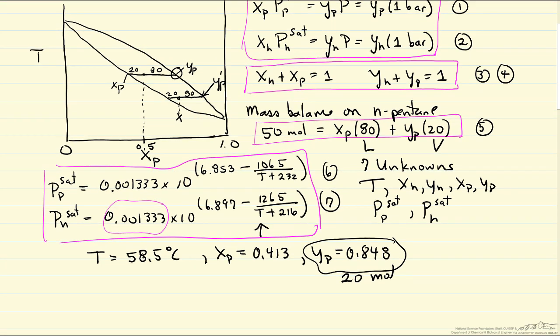And so we're going to end up solving the same equations. Antoine's equations don't change, the equations for Raoult's law for the two components don't change. The only thing that changes is the mass balance. And so the mass balance says the total amount we have is 20 moles times the mole fraction of pentane.